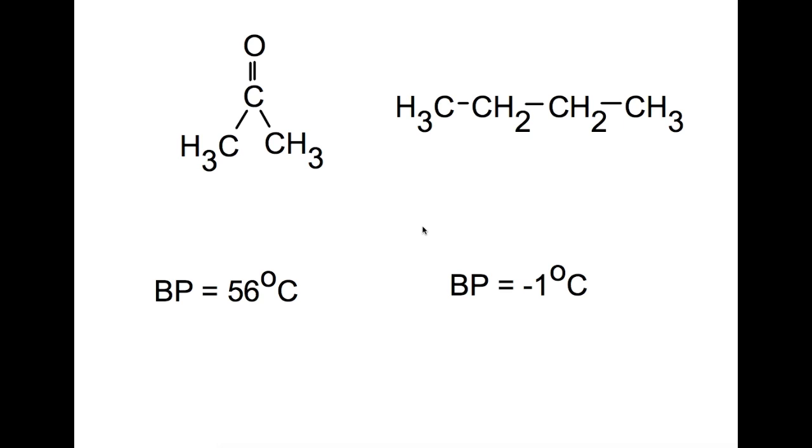Here we're looking at the boiling point of two different molecules. On the left we have propanone and on the right we have butane. To be able to compare the two molecules we need to account for London dispersion forces, so the molecules should be of a similar size and gram formula mass. The gram formula mass of both of these molecules is 58.